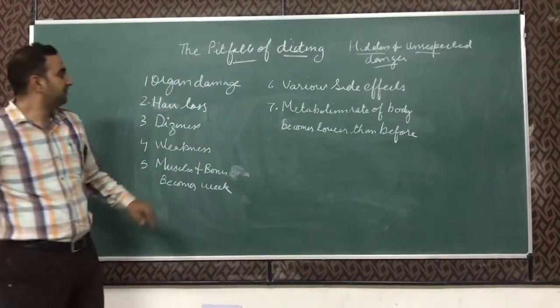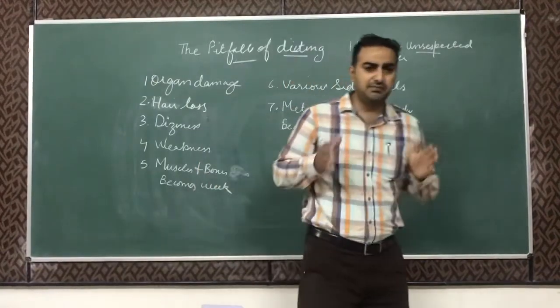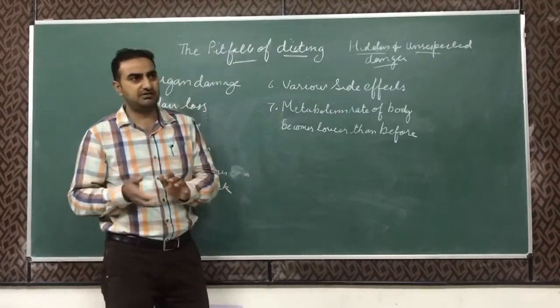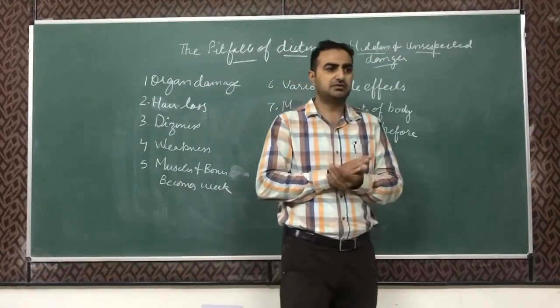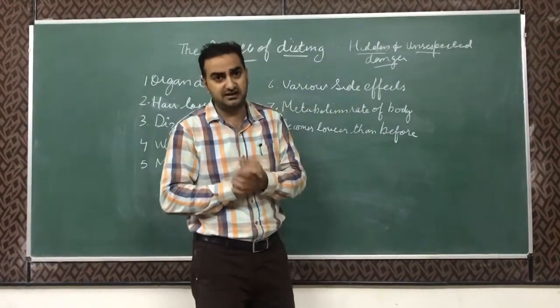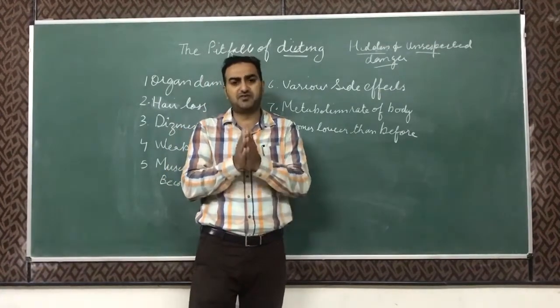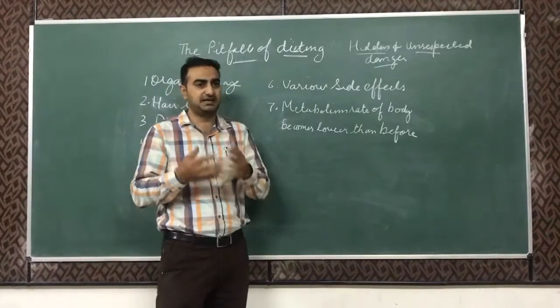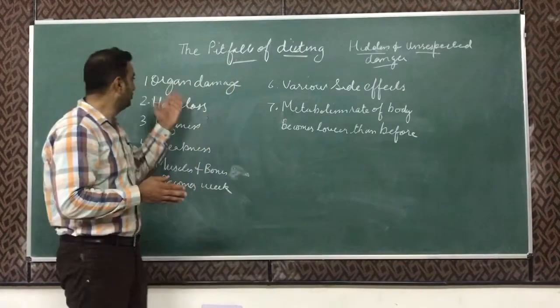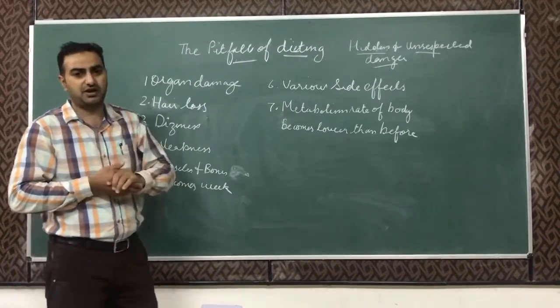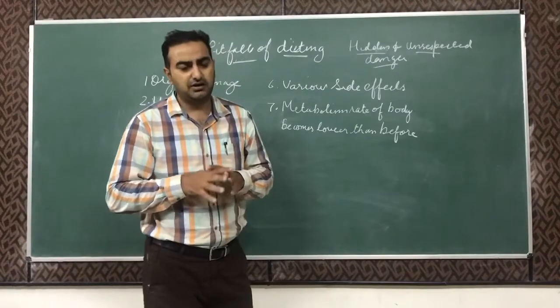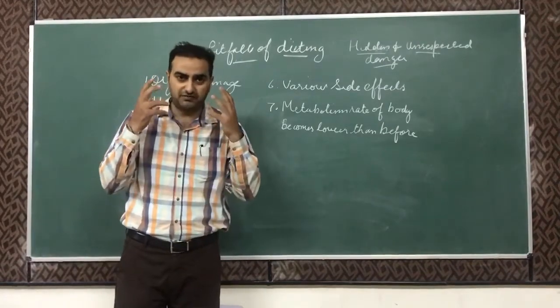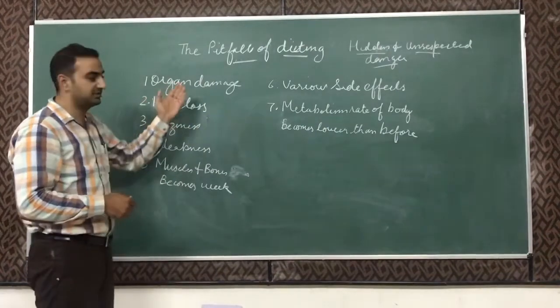First is organ damage. There are basically many kinds of elements, nutrients which are required by the body for daily working. Suppose iodine is there, salt is there, sodium is there. Many kinds of elements or minerals are there which are needed for proper functioning of different organs like kidneys and all that. But if you are not eating the things for longer duration, it can lead to organ damage. If you are not getting vitamin E and all that, regularly you are not eating food, then it can lead to organ damage. It can lead to weakness of eyes also, eyesight also.